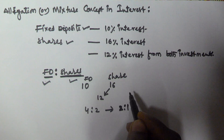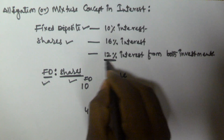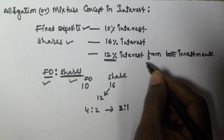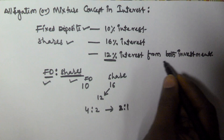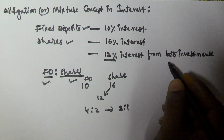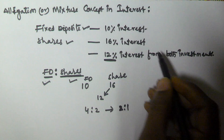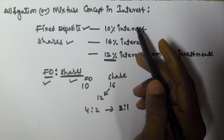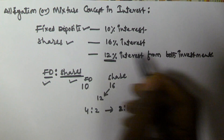So he is getting 12% interest from both investments. The allegation and mixture concept can also be used in interest-related problems. Let me repeat this question once again.